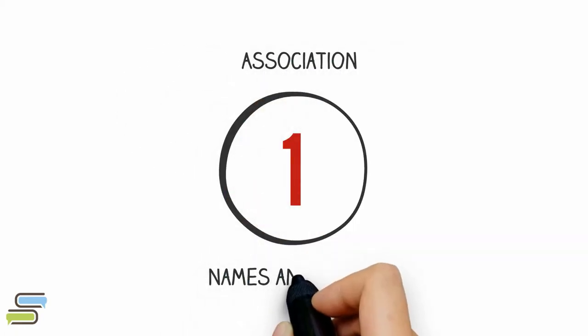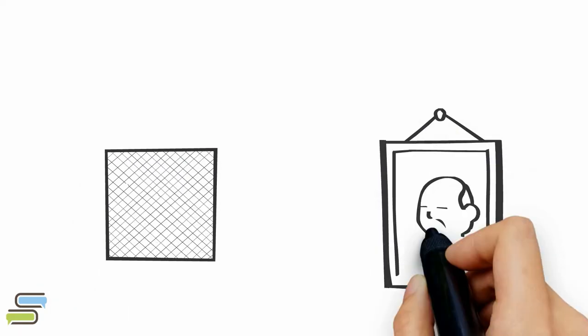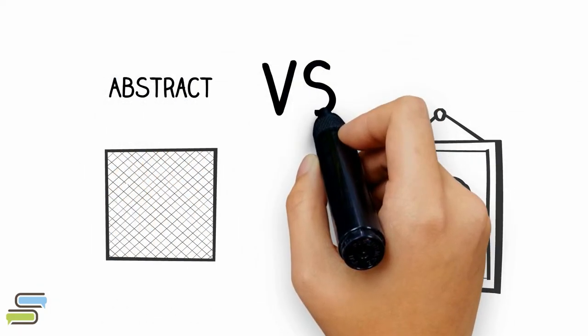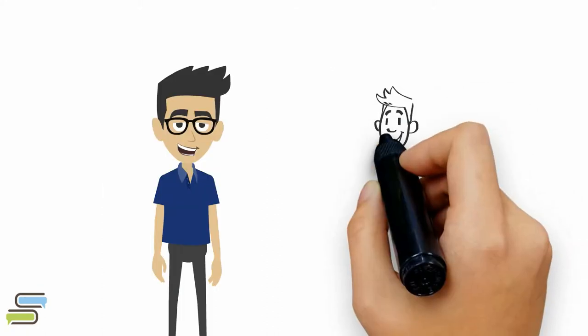Trick 1. Make associations with the person name and face. To make a person's name less abstract and more memorable, you can relate his name with something that you already know. Here's an example.